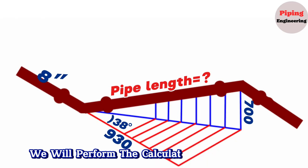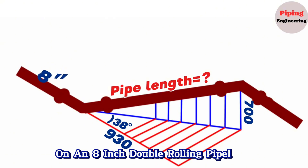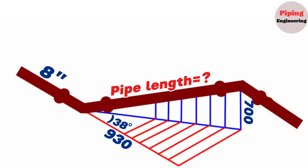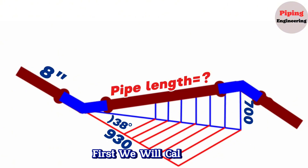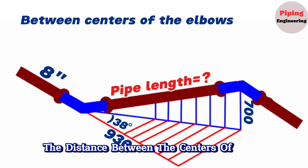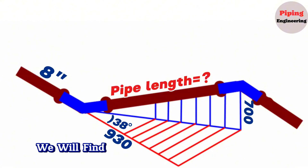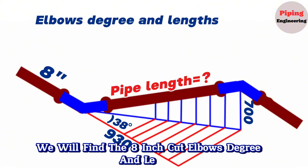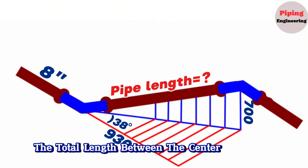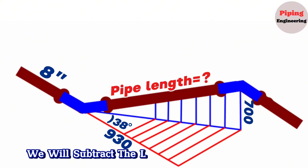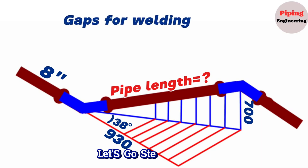We will perform the calculations in this video on an 8-inch double rolling pipeline. To find the pipe piece length between the two elbows, first we will calculate the distance between the centers of the elbows in this pipeline. On the next stage we will find the 8-inch cut elbow's degree and lengths, and finally from the total length between the centers of the elbows, we will subtract the lengths of the cut elbows and the gaps for welding. Let's go step by step.